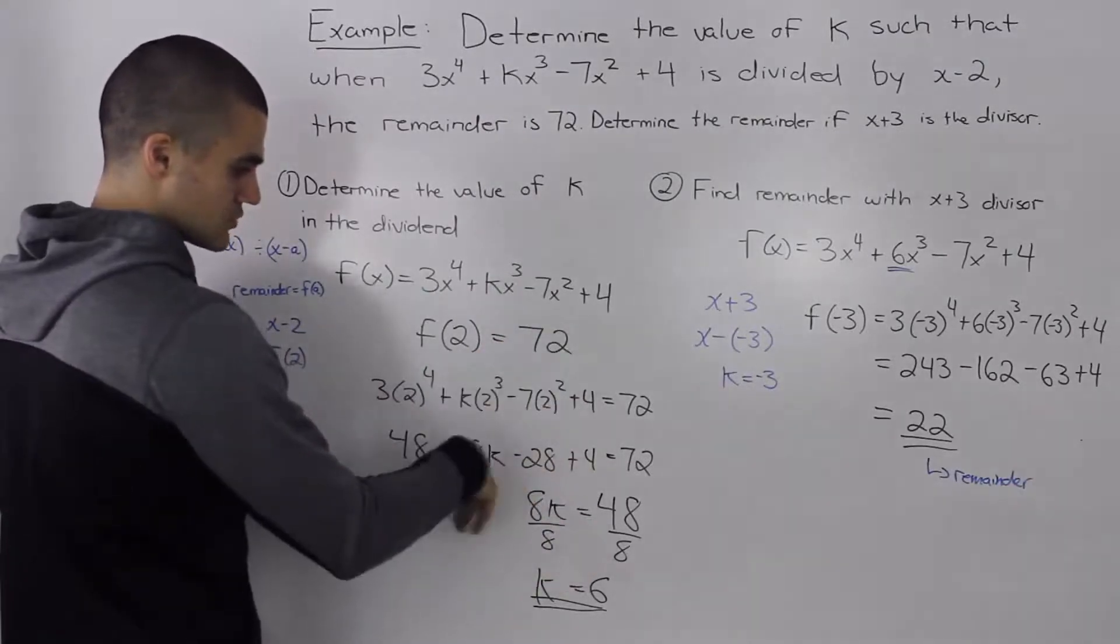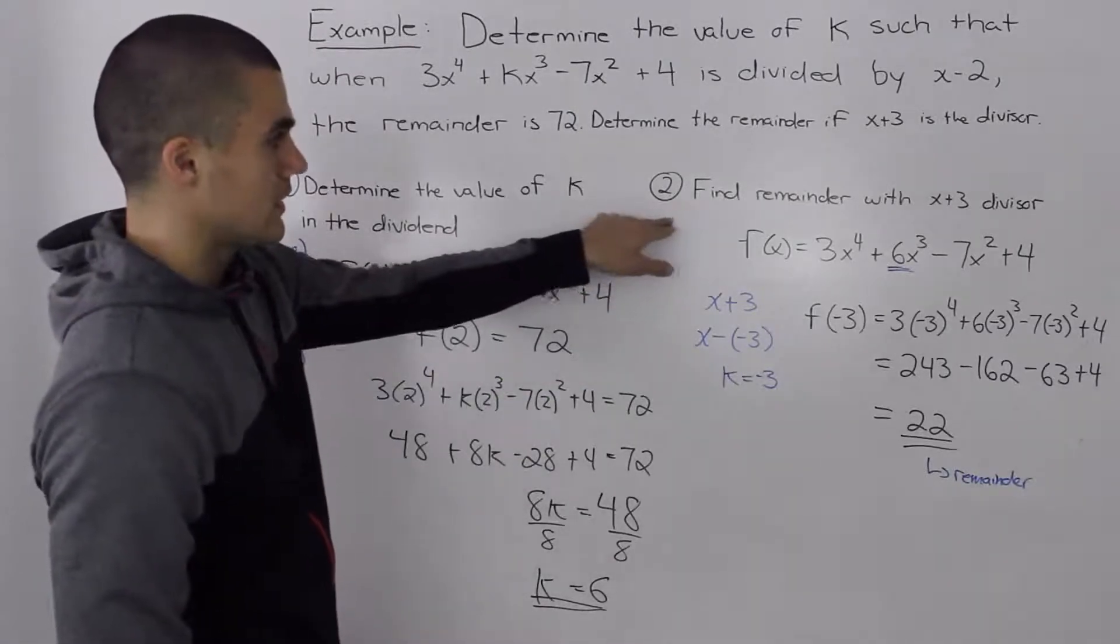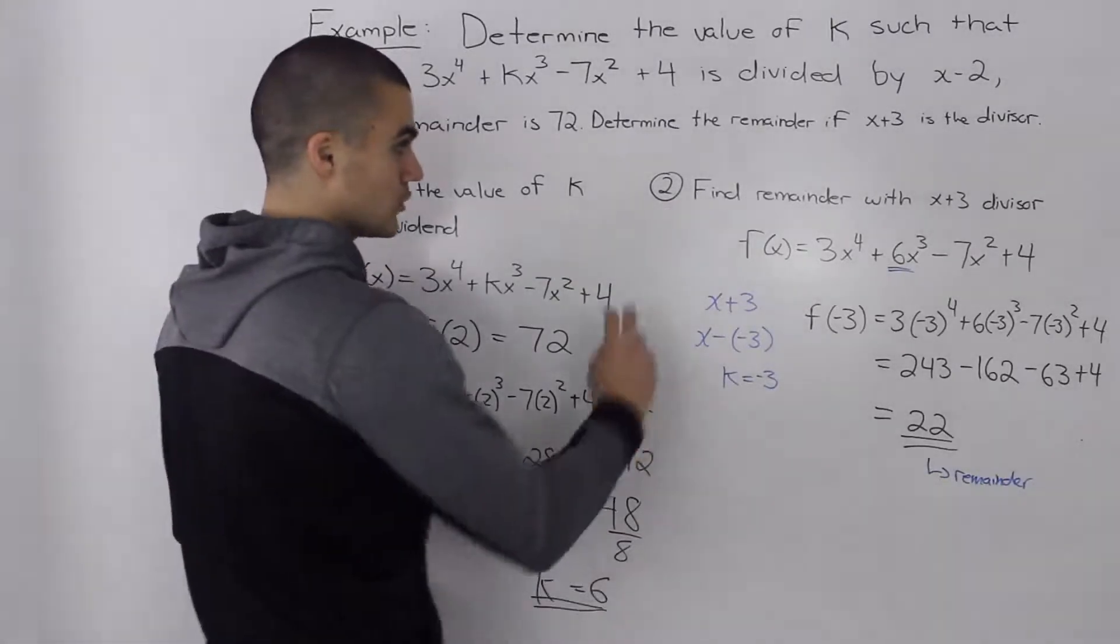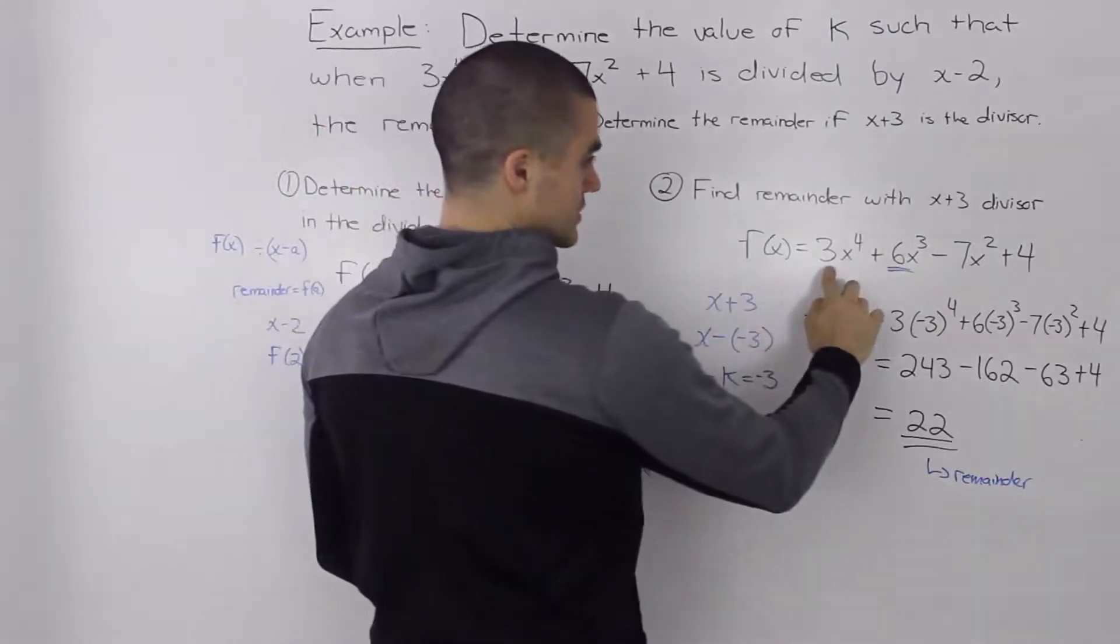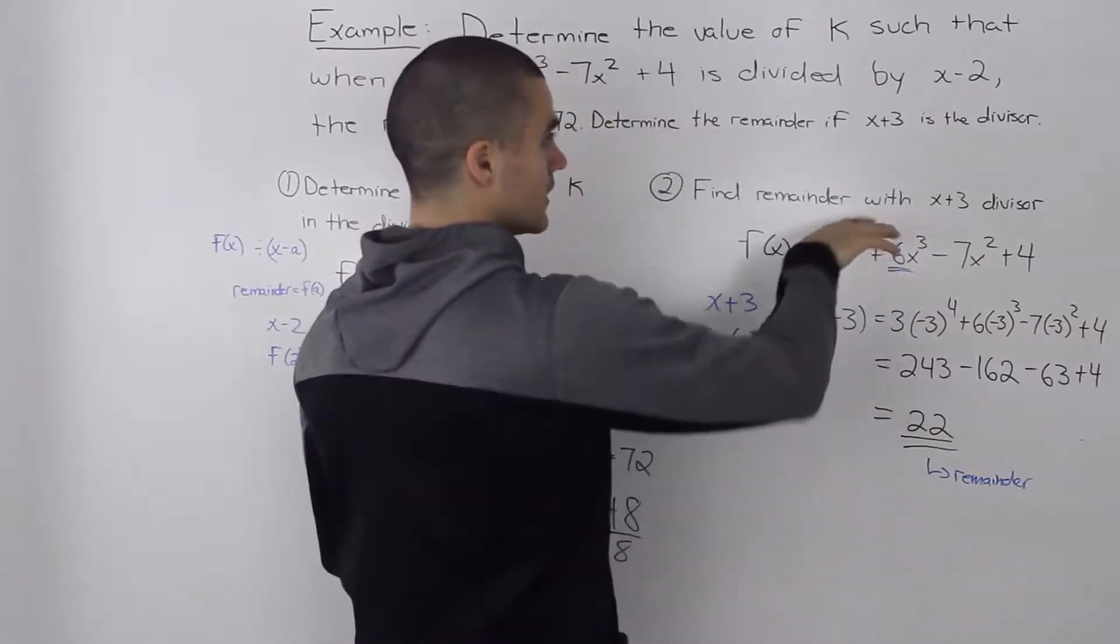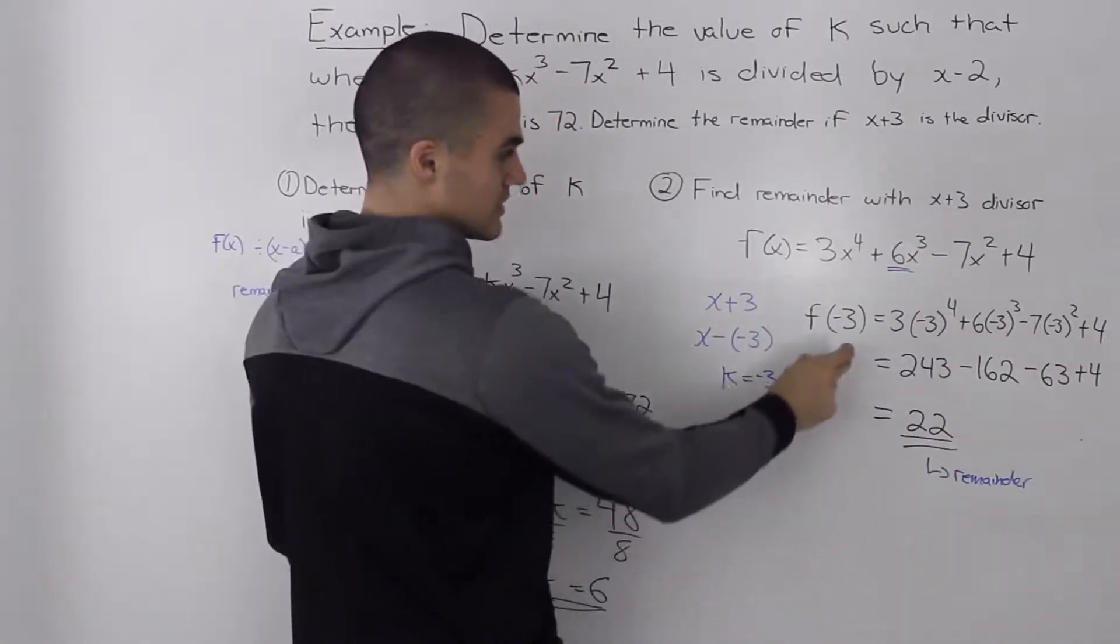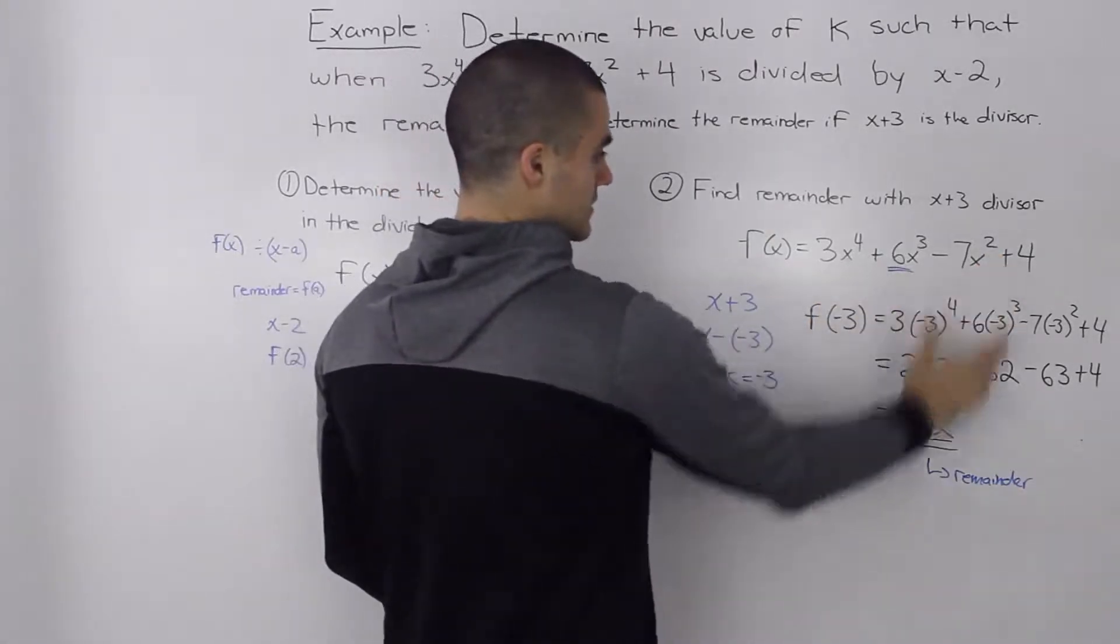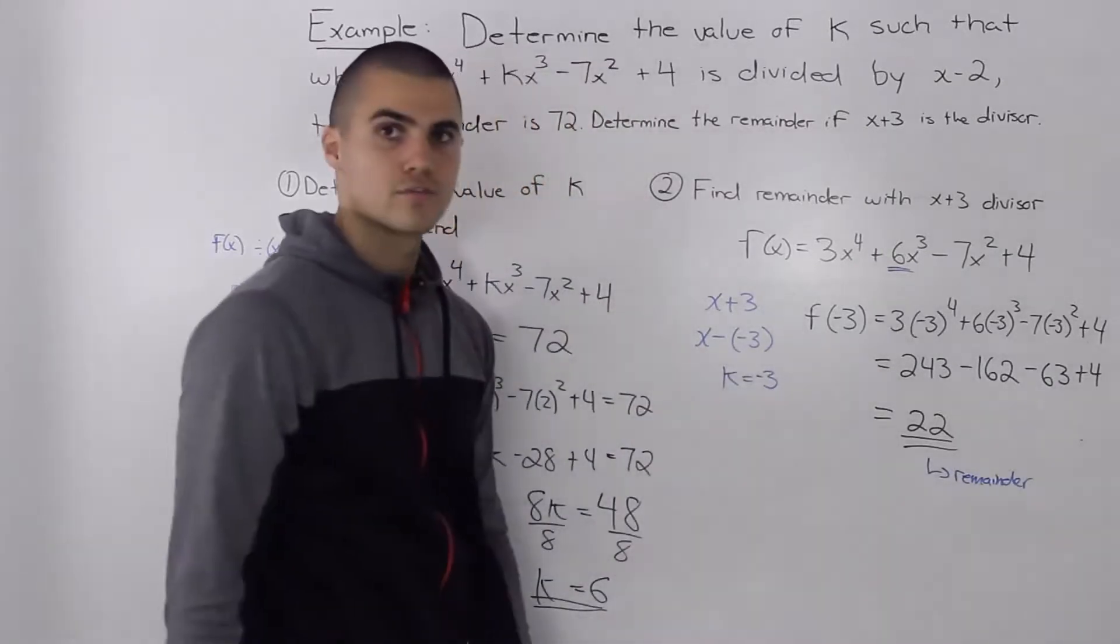So doing that, doing all the algebra, we got a k value of 6. And then we can solve part 2 pretty easily using the remainder theorem again with our new dividend, because now we know what that k value is. So our dividend is 3x to the power of 4 plus 6x to the power of 3 minus 7x squared plus 4. To find the remainder when x plus 3 is the divisor, all we do is we find what f of negative 3 would be. And then plugging in negative 3 for the x values in the dividend, do all the algebra, and we get a final remainder of 22.